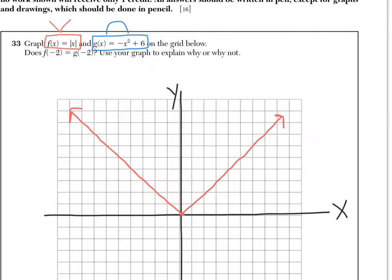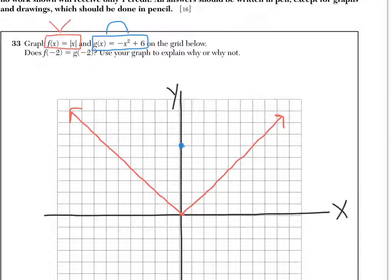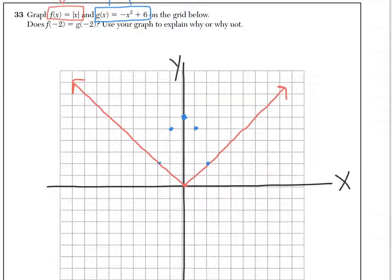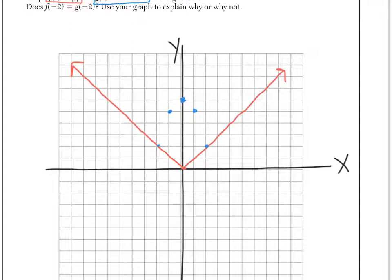Now for the quadratic g(x) equals negative x squared plus 6. The plus 6 means we go 6 up — so the vertex is at (0, 6). Then we shift over one to the left, one to the right, and so on, and connect the points. It looks like an upside-down parabola, and if you want a more precise graph, you can use your graphing calculator.